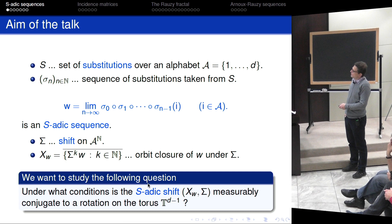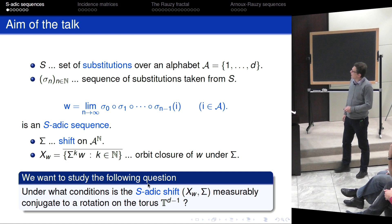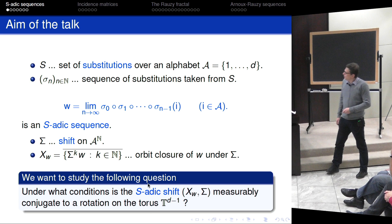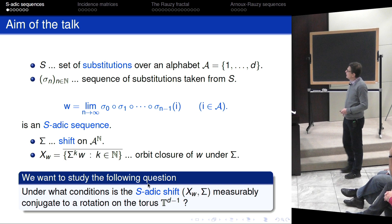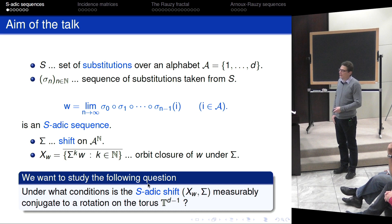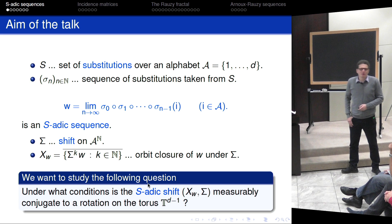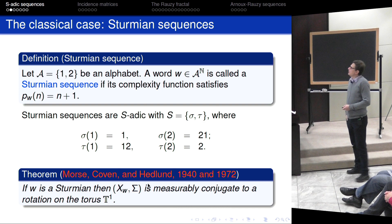Using this word, we wish to define a dynamical system. Let sigma be a shift on A to the N. We look at the orbit closure of the S-adic word W under this shift and call this X_W. The pair X_W together with the restriction of the shift to X_W is called the S-adic shift. We would like to understand under what conditions, as general as possible, this S-adic shift is measurably conjugate to a rotation on the torus.